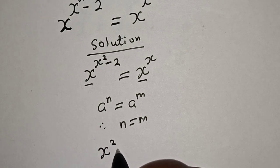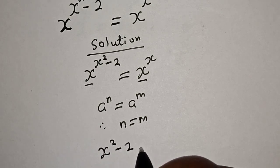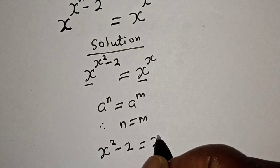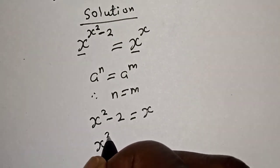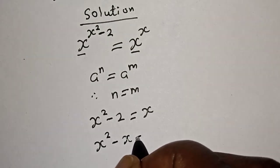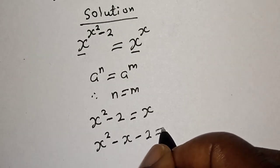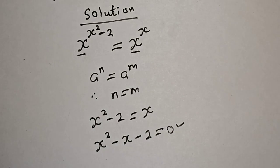So from here we have x squared minus 2 is equal to x, and we have x squared minus x minus 2 is equal to zero. This is a quadratic equation.